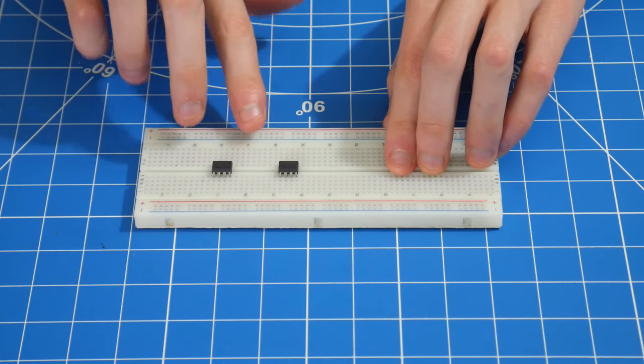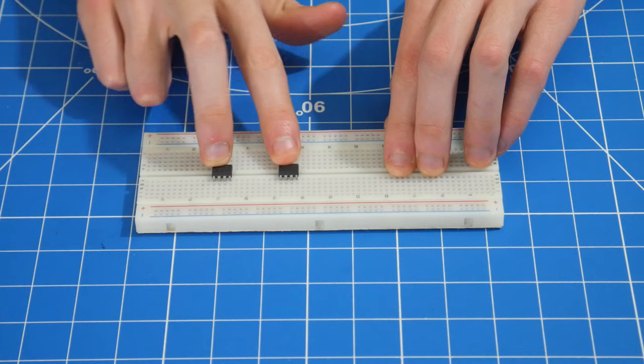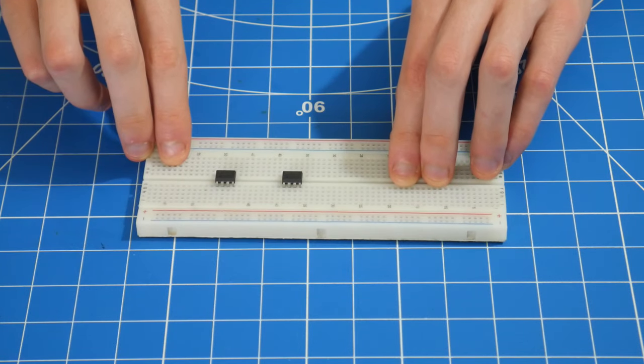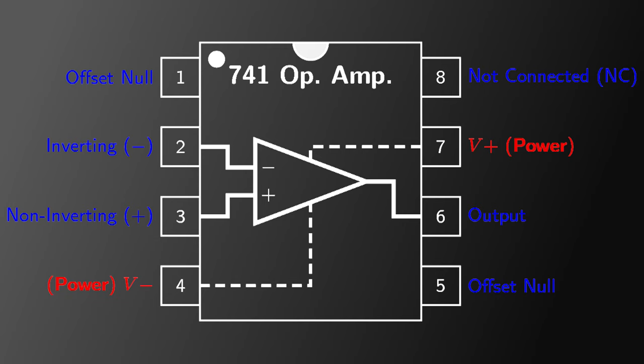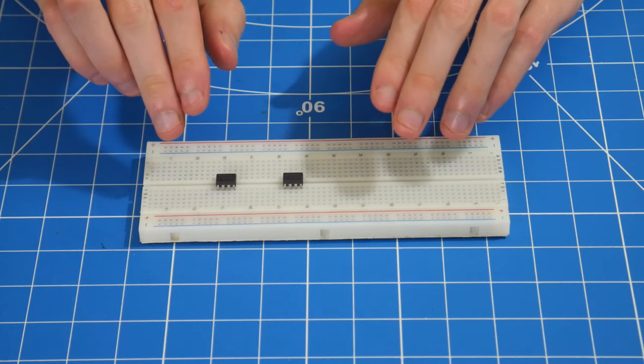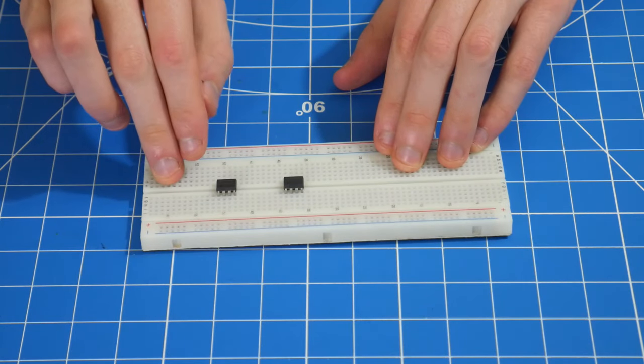So we're going to start our circuit off with two LM741 operational amplifiers. The pinout looks like what you see on your screen right now. So, let's start populating the area around these.